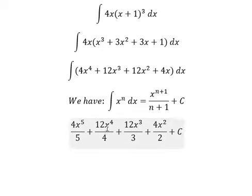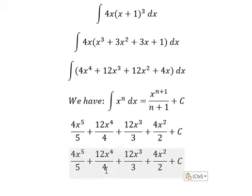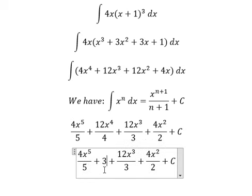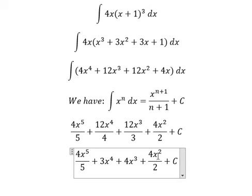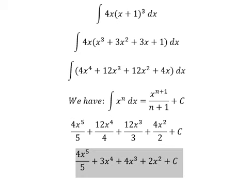Simplifying the coefficients: 12 divided by 4 gives 3, 12 divided by 3 gives 4, and 4 divided by 2 gives 2x squared. This is the final answer.